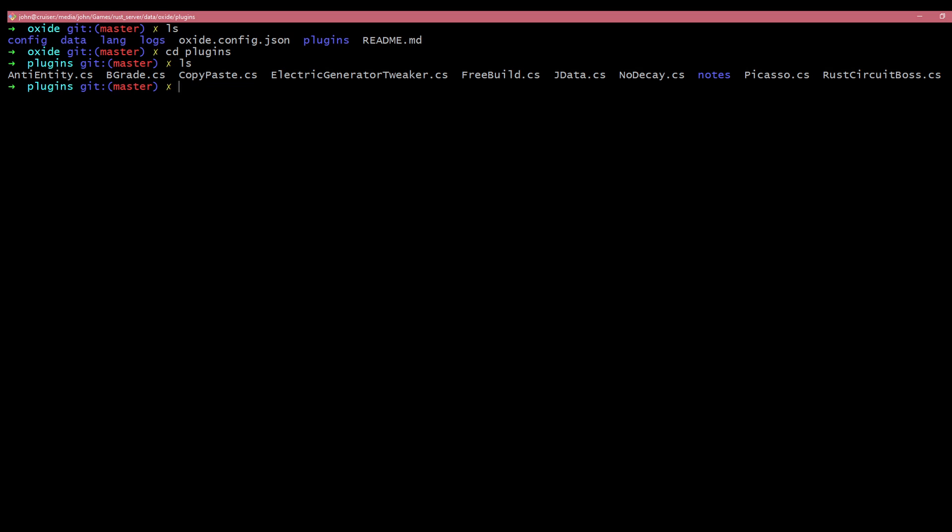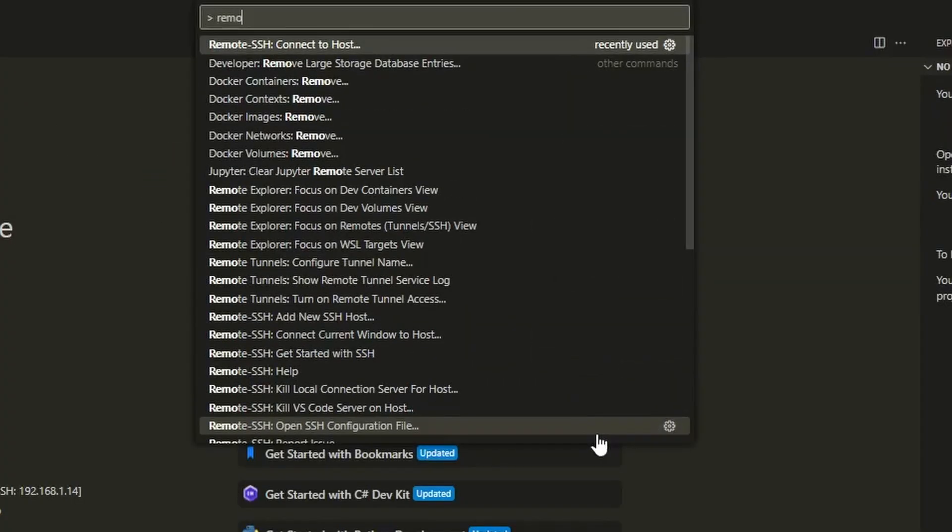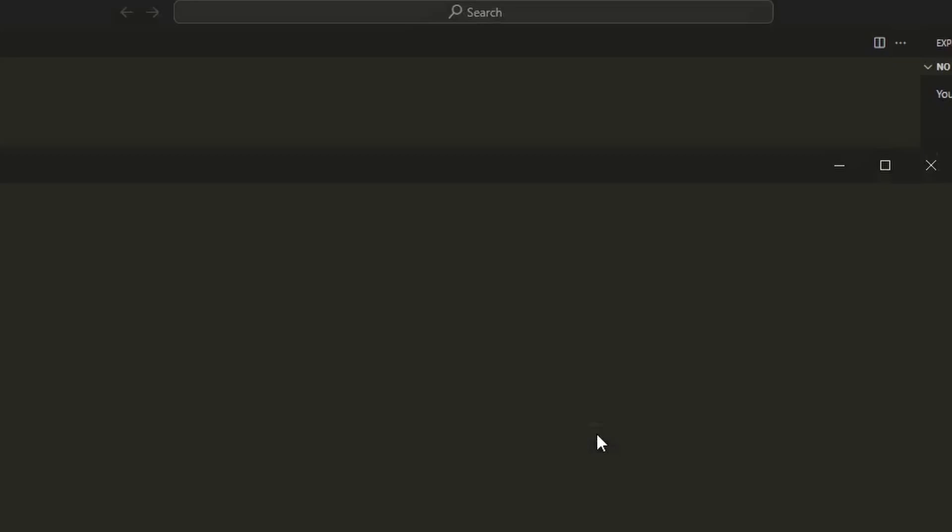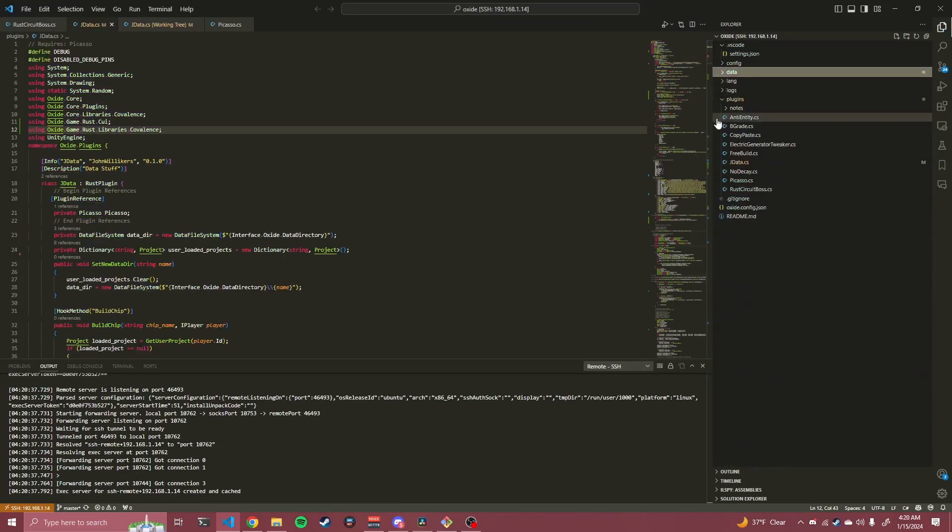This consisted of my laptop running the server and having a file called rustcircuitboss.cs within the plugins folder. I would then use the extension remote.ssh within VS Code to SSH into my laptop and open up the oxide folder in VS Code. This gave me access to my laptop's file system as well as gave me terminals that I could access as well.